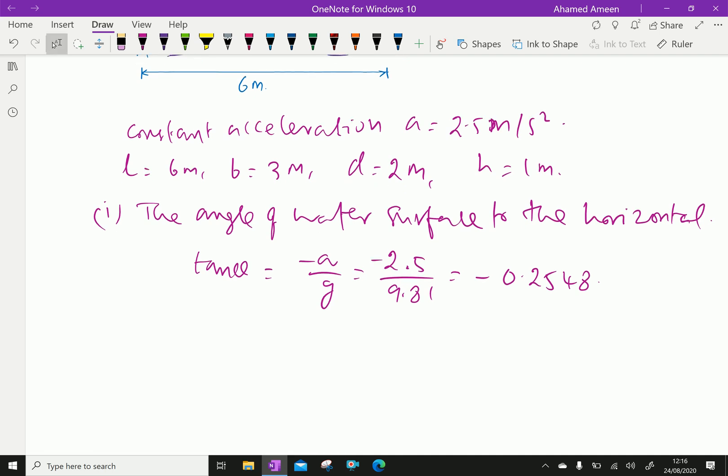Because the slope is negative, consider theta as positive. Therefore, theta equals tan inverse of 0.2548, which gives approximately 14 degrees 17 minutes.